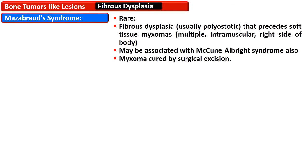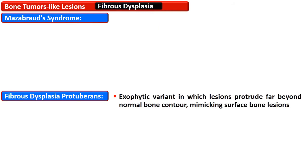Mazabraud syndrome is a rare disorder in which fibrous dysplasia of usually polyostotic variety is associated with soft tissue myxomas. These myxomas are multiple, intramuscular and usually present on one side of the body; this condition may also be associated with McCune-Albright syndrome. The myxomas are cured by surgical excision. Another variant is fibrous dysplasia protuberance, an exophytic variant in which lesions protrude far beyond the normal bone contour, mimicking a surface bone lesion.